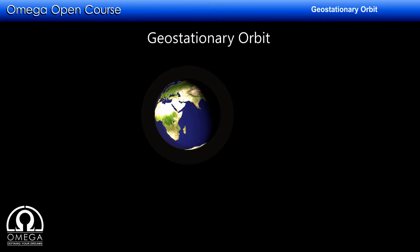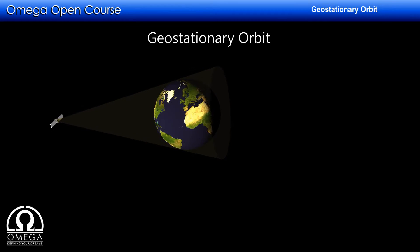In order to calculate the radius of the geostationary orbit, let us look at the satellite in the top view.